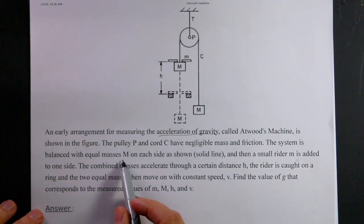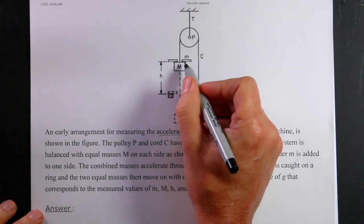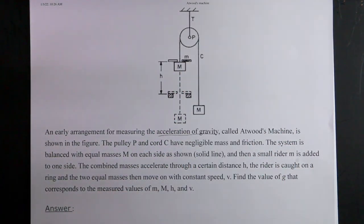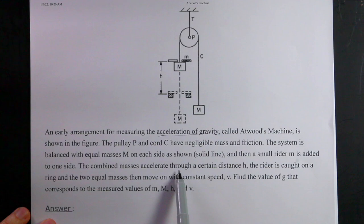The system is balanced with equal masses on each side. Then a small rider M, is that the rider right there? Well anyway, we're going to add an extra mass M to there, is added to one side. The combined masses accelerate through a certain distance H, okay, and the rider is caught on a ring over here.